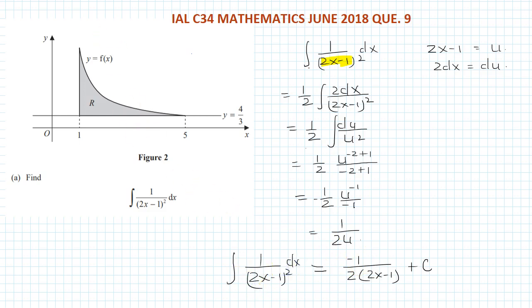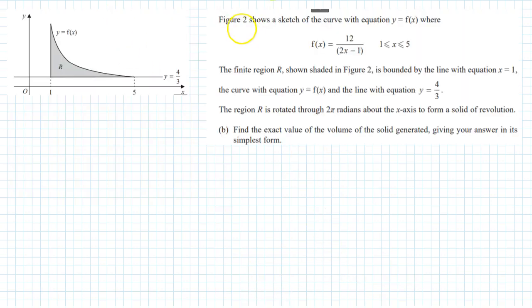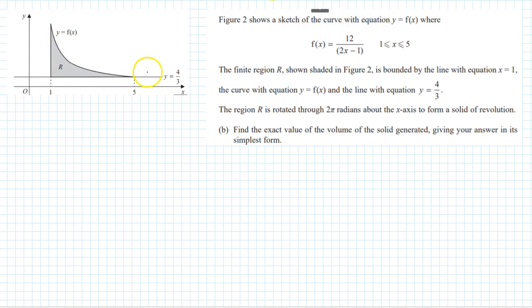So the integral of 1 over (2x minus 1)² dx equals negative 1 over 2(2x minus 1) plus C — that is the solution. Now, this figure shows the sketch of a curve with equation y equals f(x), where f(x) equals 12 over (2x minus 1).